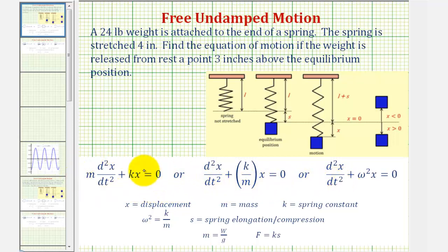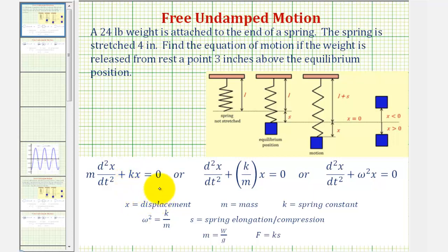Looking at this first equation, we have m times the second derivative of x with respect to t, plus k times x equals zero, where m is the mass, k is the spring constant, and x is the displacement. The second equation is obtained by dividing through by m, and sometimes you'll see k divided by m replaced with omega squared.